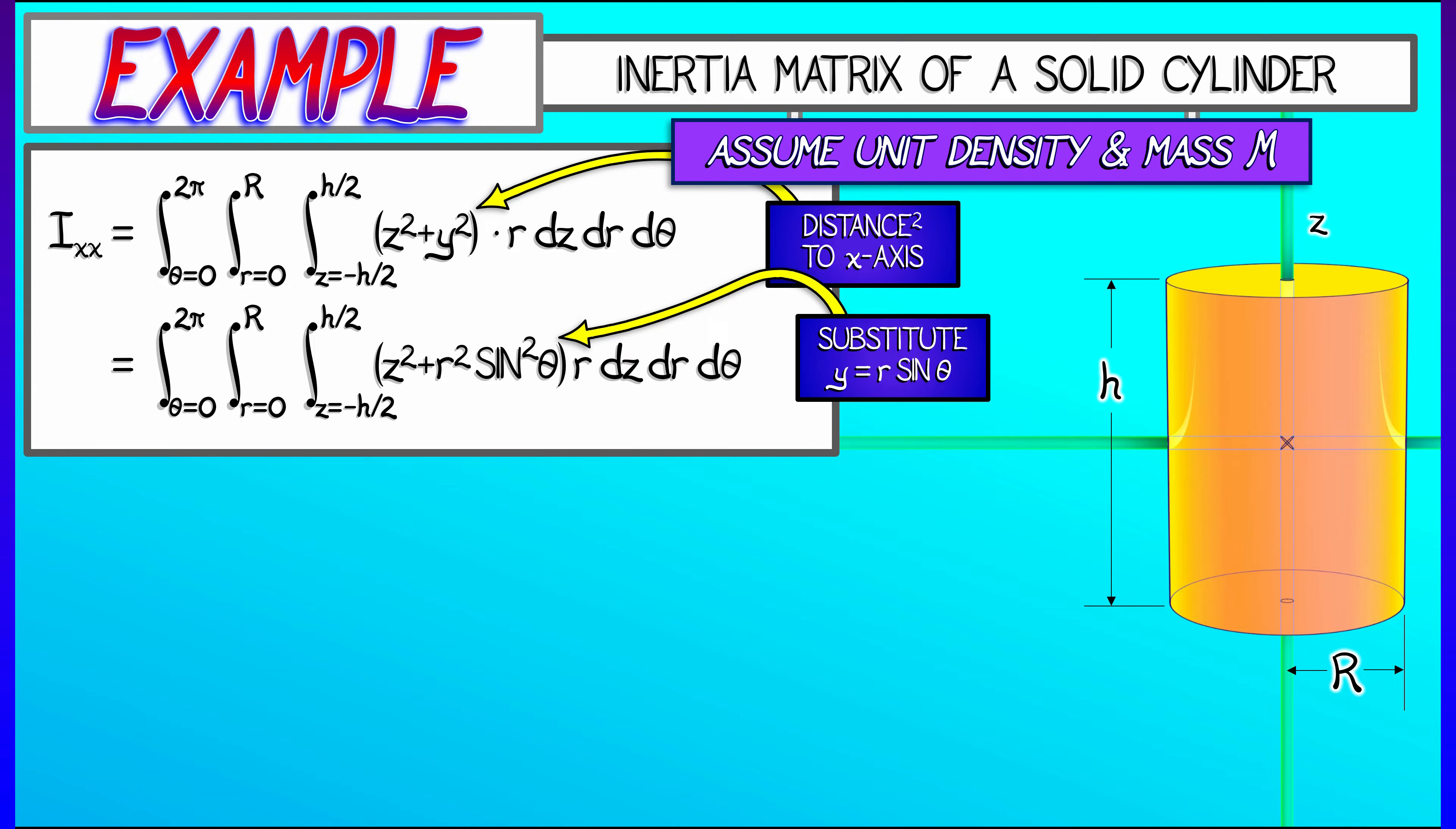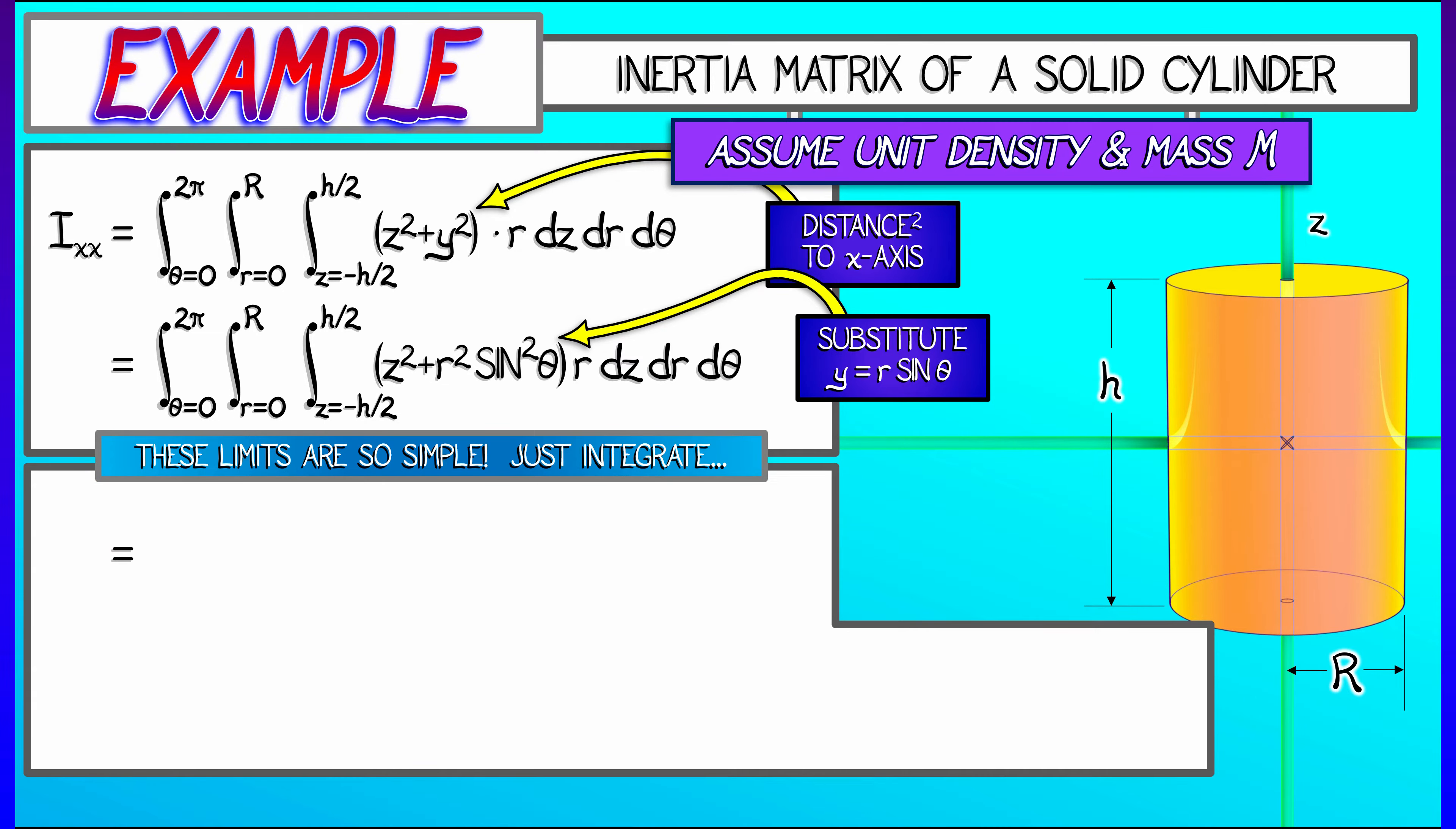So let's do this integral. Let's follow the steps in order. The limits of integration are numerical, so this won't be so bad. If we integrate first with respect to z, we integrate z squared dz, that gives us z cubed over 3. As we evaluate that from minus h over 2 to h over 2, what that winds up giving us is h cubed over 12.